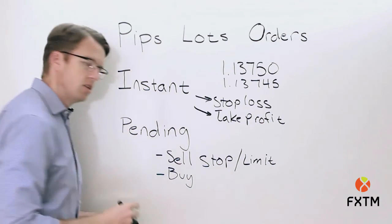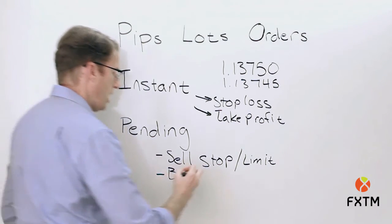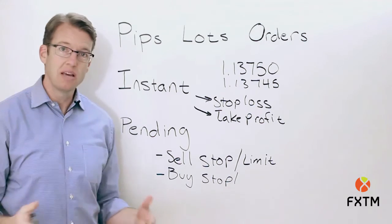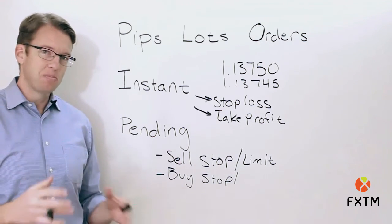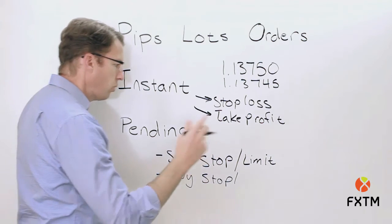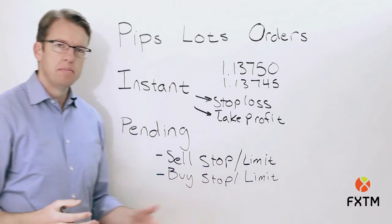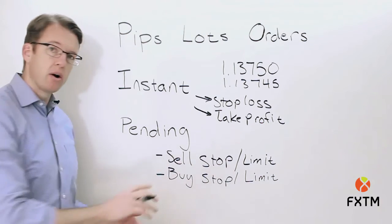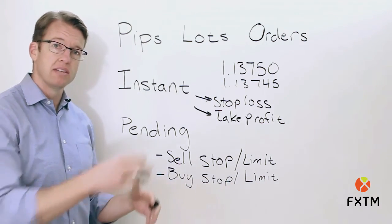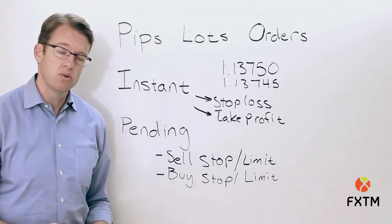The inverse applies for buy orders. If a trader wants to buy as the market is rising and beginning to gather bullish momentum, they'd use a buy stop — they could buy cheaper right now, but they want to buy as price moves up in their favor. If instead they think the EUR/USD might drop to a support level and want to execute a buy there, they'd use a buy limit, which triggers as the available price comes down to their anticipated entry level.